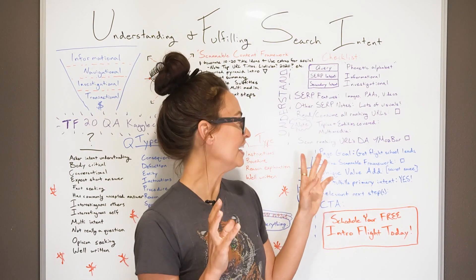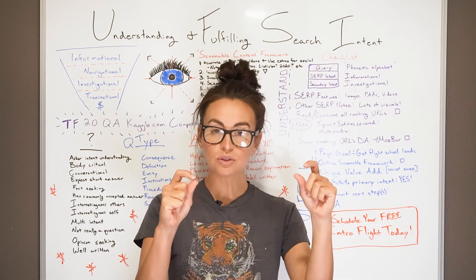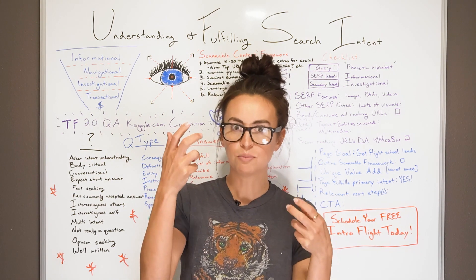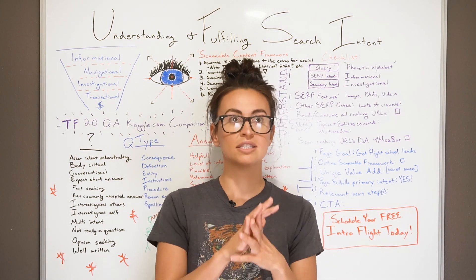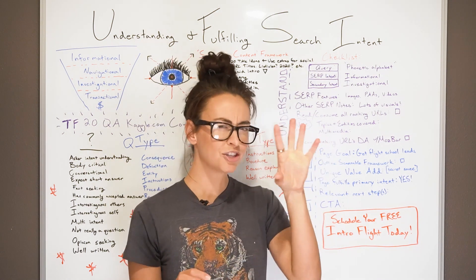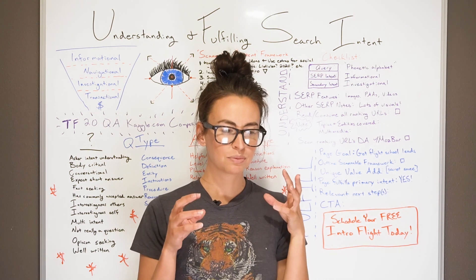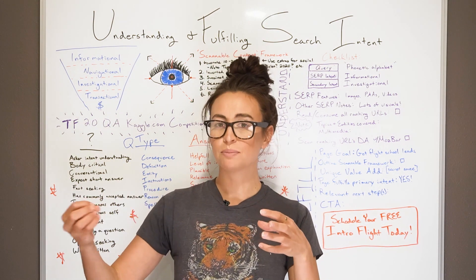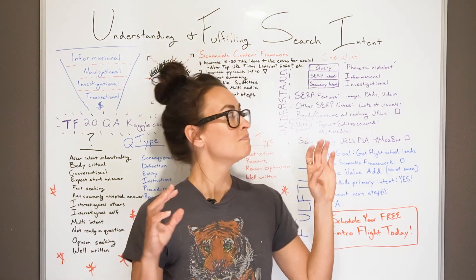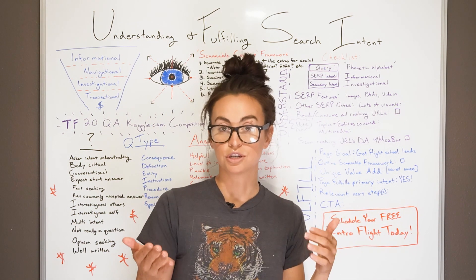My favorite secret hack is to activate MozBar for the search result page. You can see the domain authority and backlinks for every single URL on a SERP — a lot of people don't know you can use MozBar directly within Google search results. I use this to evaluate all of the organic DAs and assess that range to see if my website or my client's website might be competitive. If they're not even close, maybe I pivot and target something more appropriate for them to rank for in the short term.